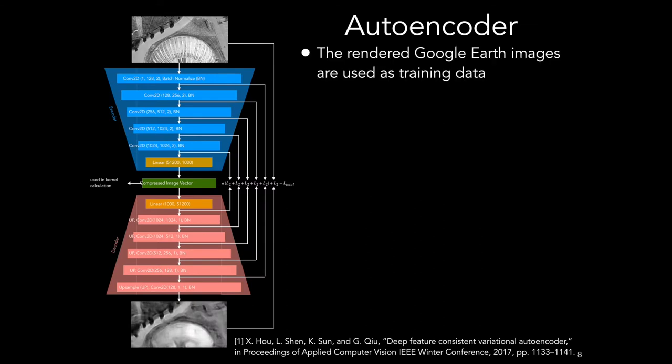The rendered Google Earth images are then used as training data for an autoencoder. For the 1.1 kilometer path we used in experiments, we had approximately 50,000 images. The network structure is based on the same architecture as used in the deep feature consistent variational autoencoder paper, but we modified the encoding to use a 1,000 dimensional bottleneck.